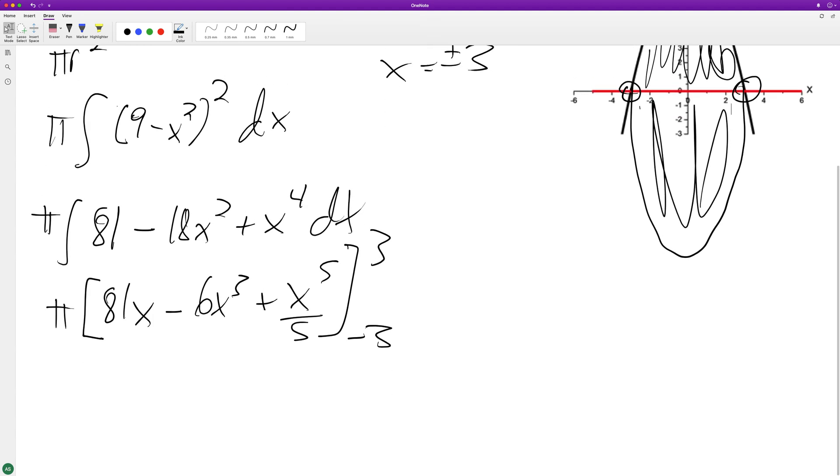Alright, so when we integrate this, what's going to happen now is we're going to get pi times—is that 243? 3 times 3 times 3 is 27, 6. Well, essentially, okay, so 2 pi. Well, pi. So we end up with 162 plus, so we end up with 162 plus, what is that, 243?